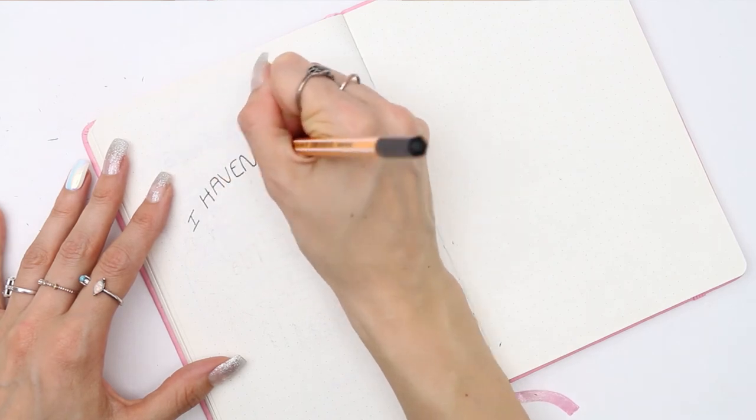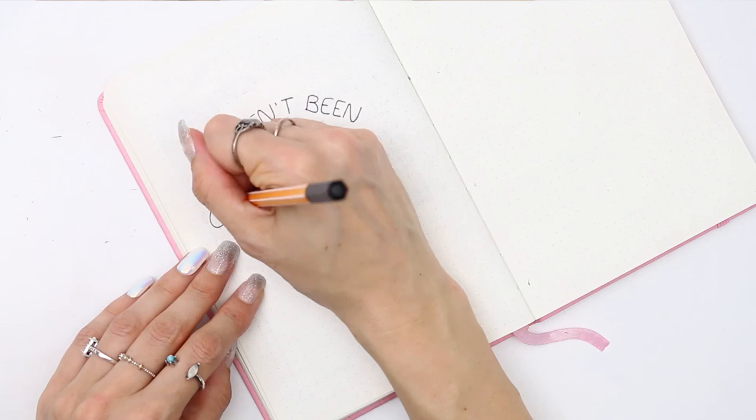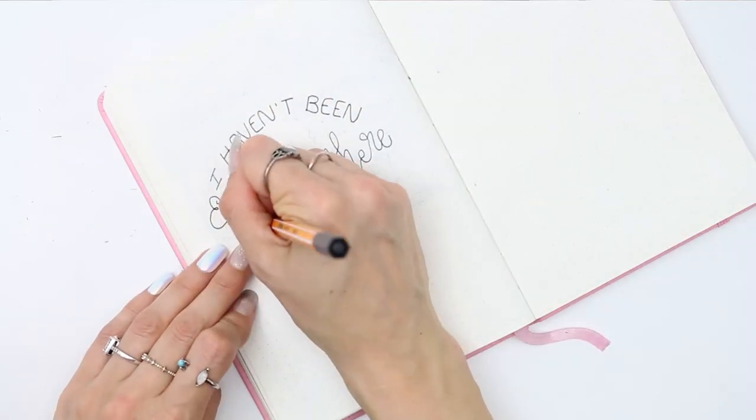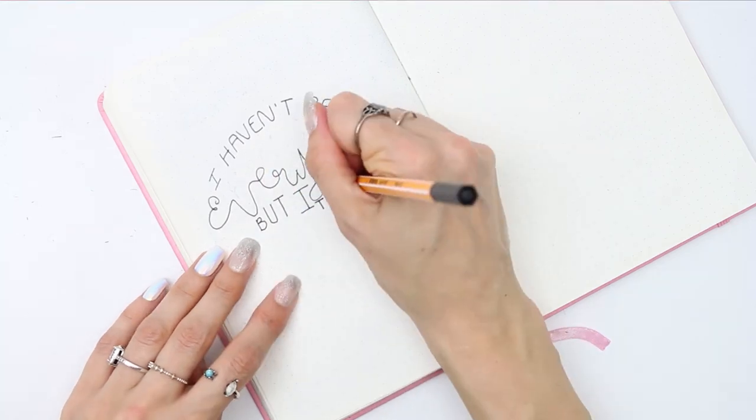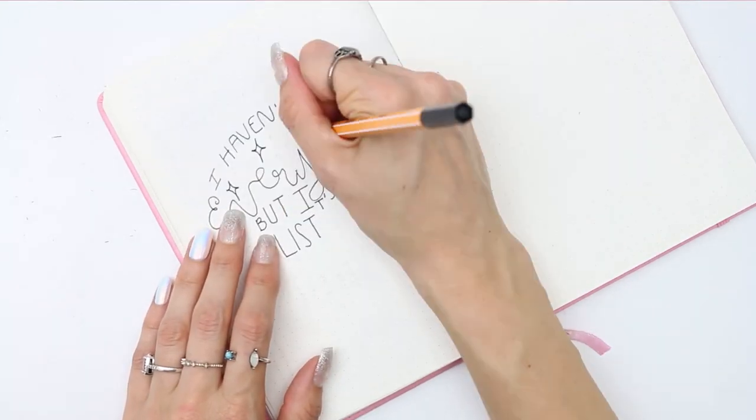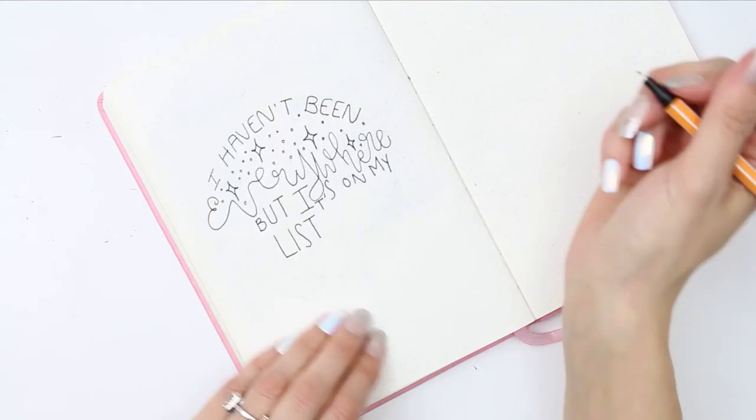For my last page in my August setup, I decided to write down a quote. I do include a quote every single month in my bullet journal, and this one obviously is to do with travel. It says 'I haven't been everywhere but it's on my list.' Then I drew a couple of mountains there and some trees as well. I just thought that the quote was really nice and it suited my setup or my theme for August.